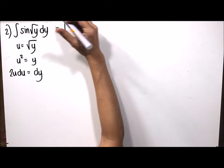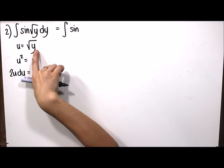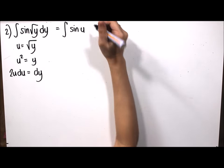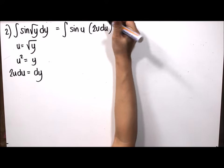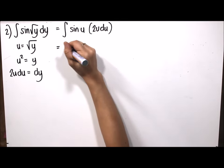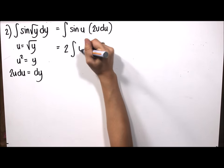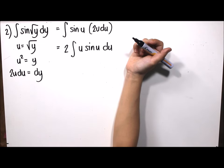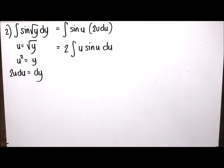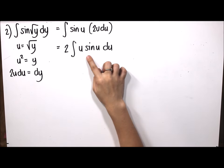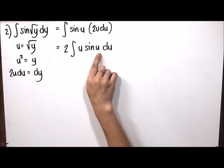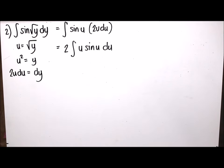Substituting into the given integral, square root of y is replaced by u, and dy is replaced by 2u du, giving us the integral of sine(u) times 2u du. We factor out 2, yielding 2 times the integral of u sine(u) du. To avoid confusion with integration by parts notation, we replace u with x.